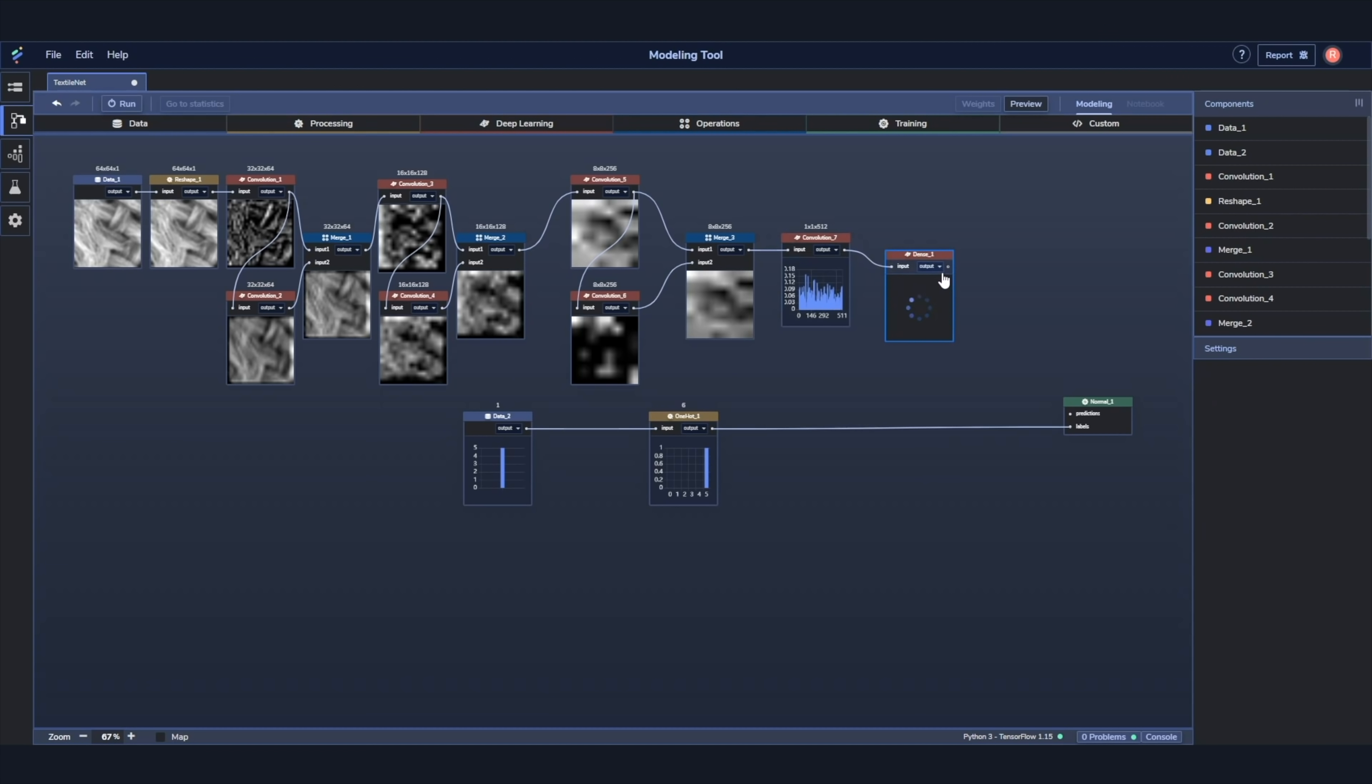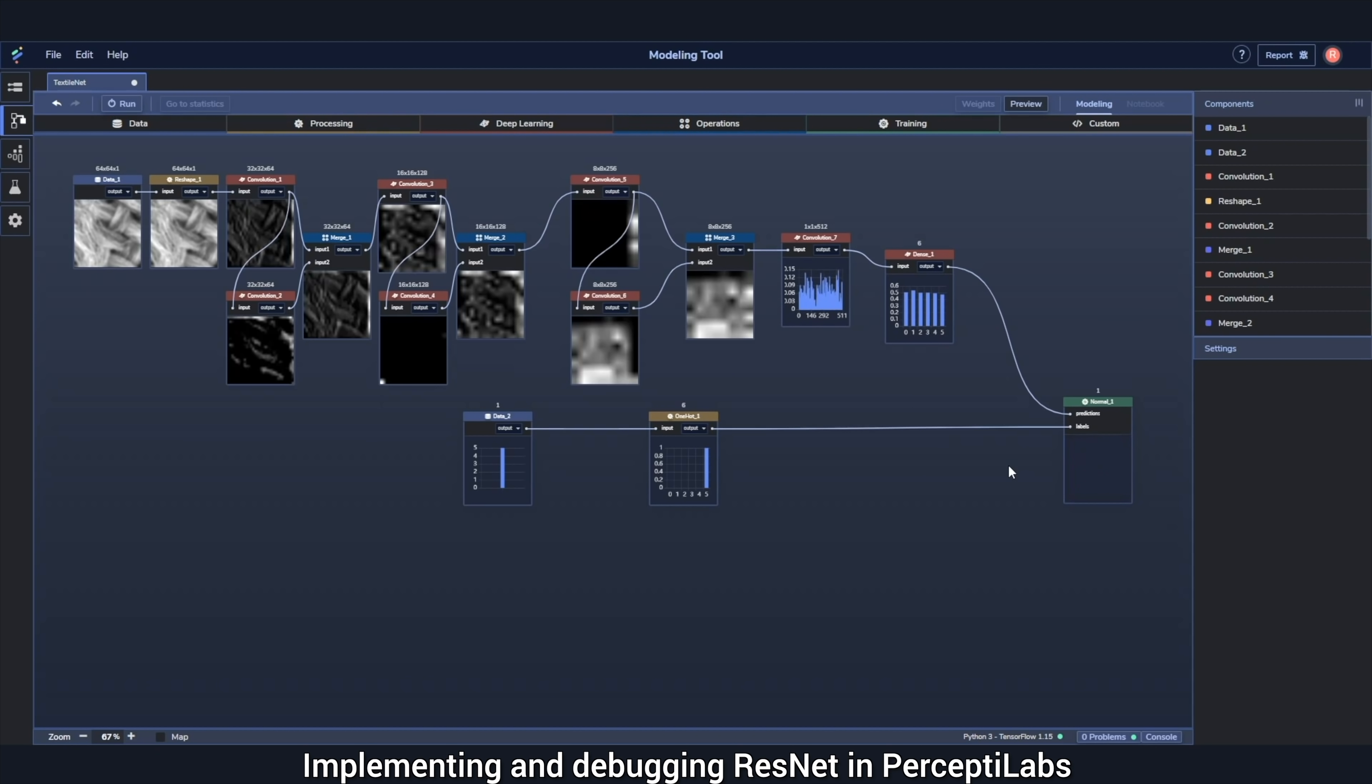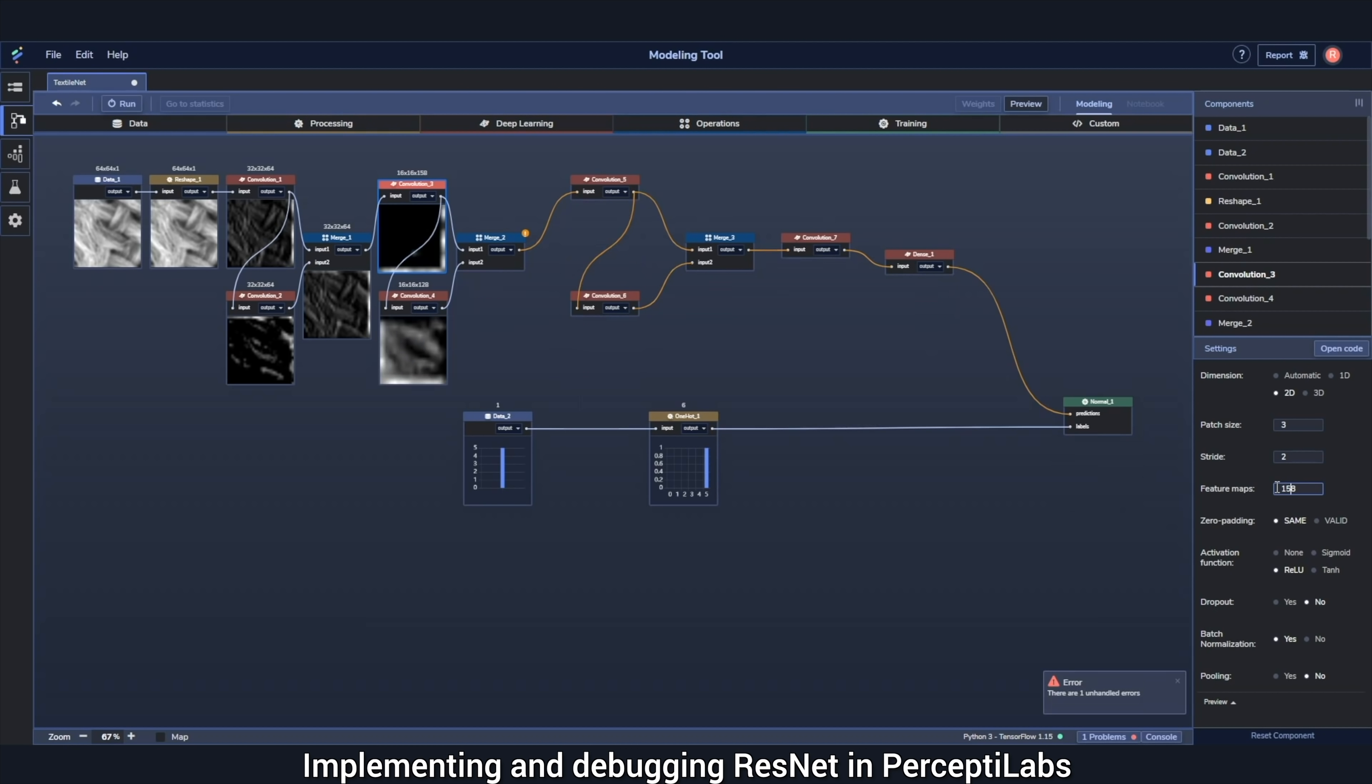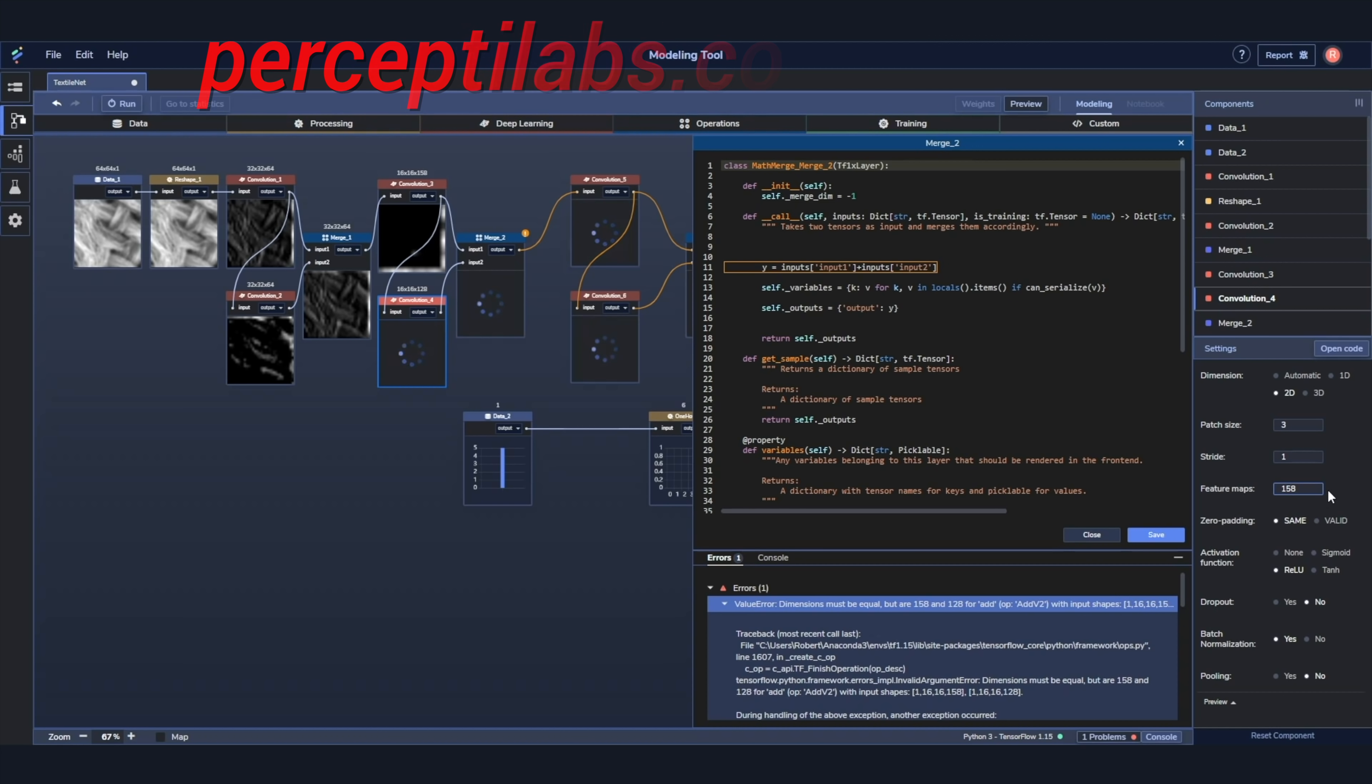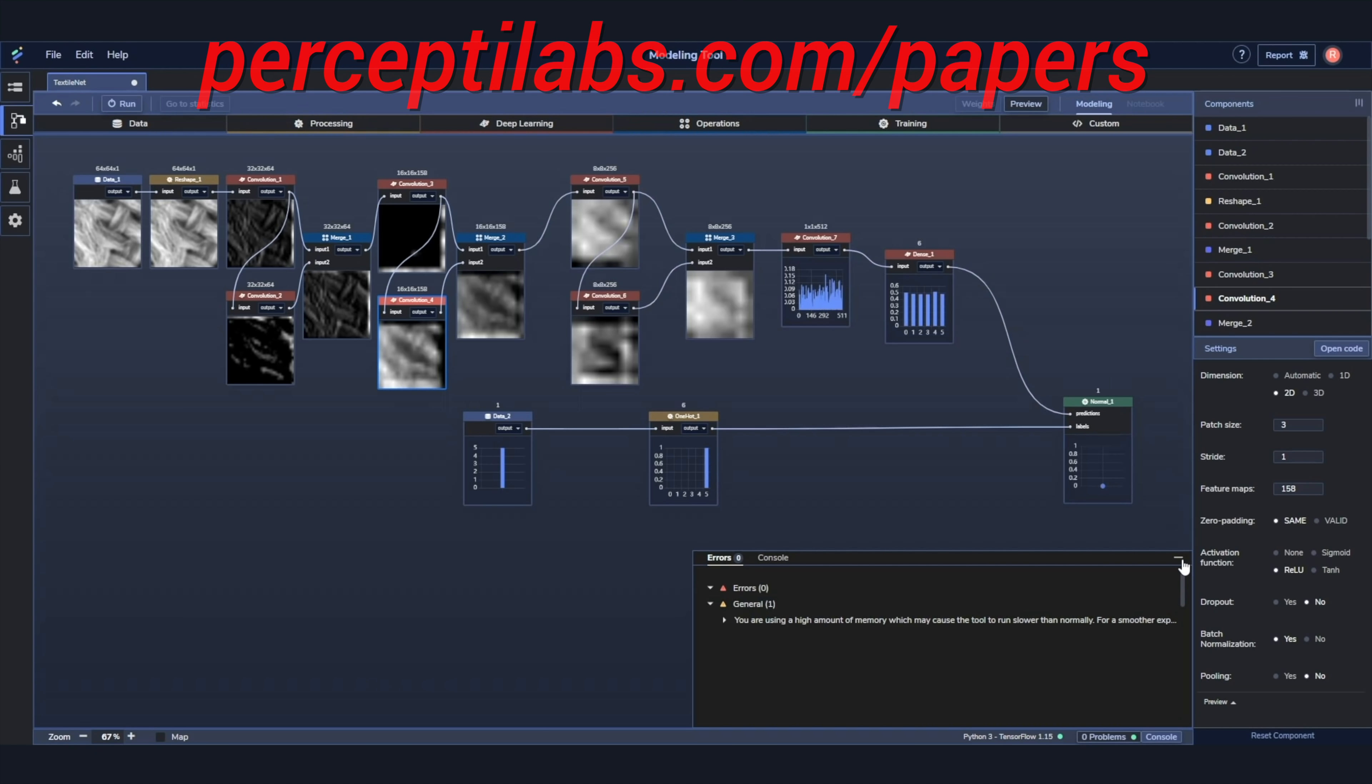PerceptiLabs is a visual API for TensorFlow carefully designed to make machine learning as intuitive as possible. This gives you a faster way to build out models with more transparency into how your model is architected, how it performs, and how to debug it. Look, it lets you toggle between the visual modeler and the code editor. It even generates visualizations for all the model variables and gives you recommendations both during modeling and training, and does all this automatically. I only wish I had a tool like this when I was working on my neural networks during my PhD years.